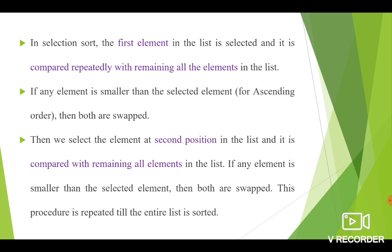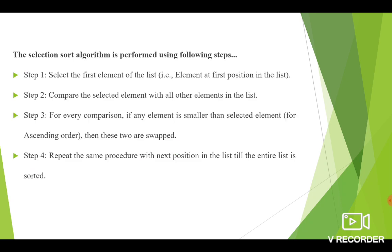Once you finish with the first element, you have to select the element at the second position. The second position element is compared with all remaining elements in the list. If any element is smaller than the selected element, then you have to do the swapping operation. Once the second position element is completed, you have to repeat the same process for the third position element. This procedure is repeated till the entire list is sorted.